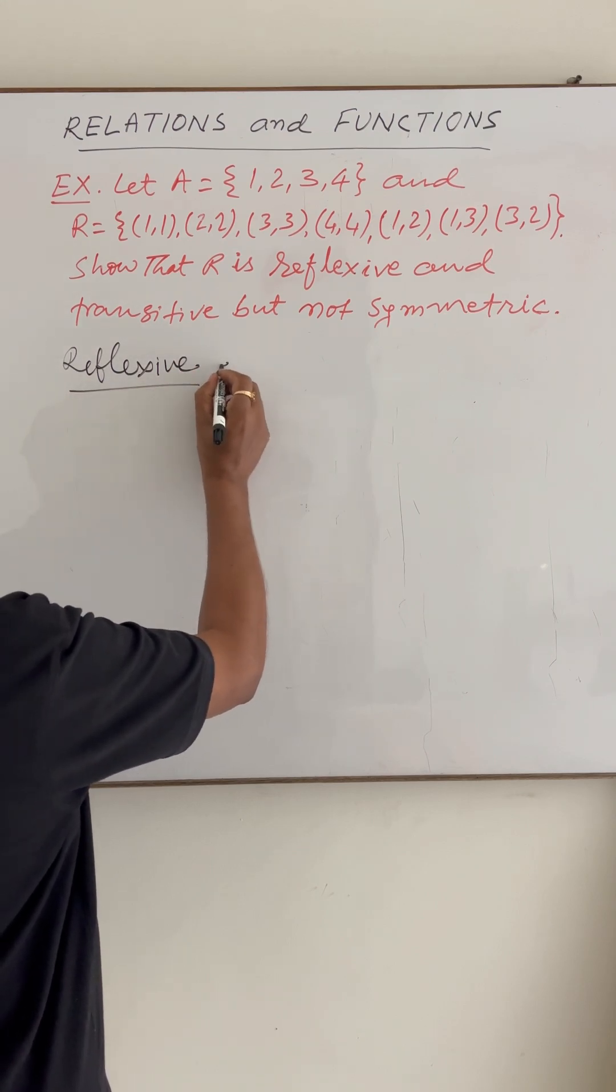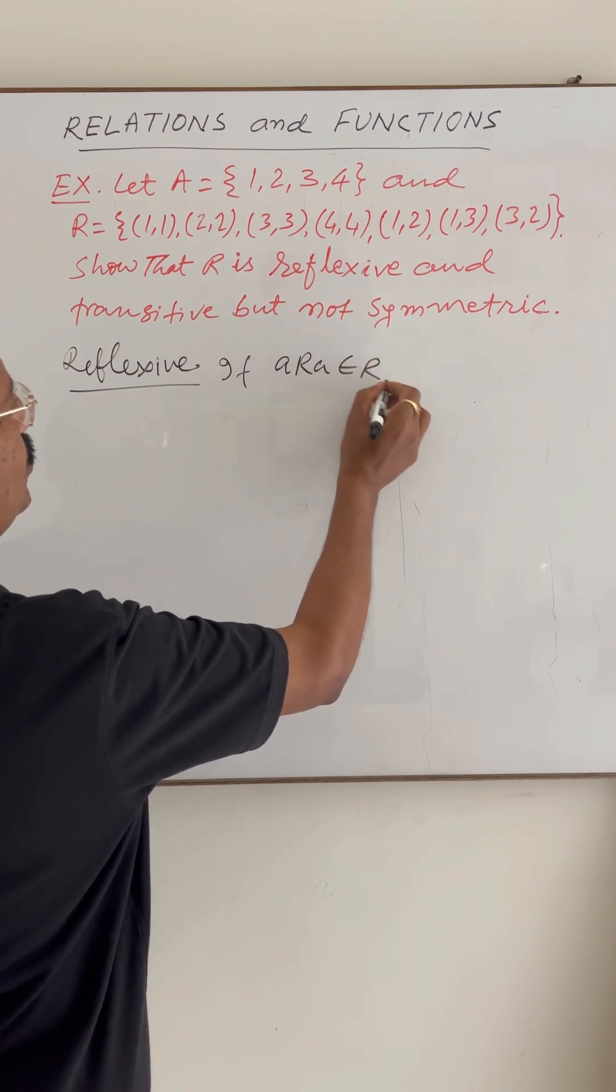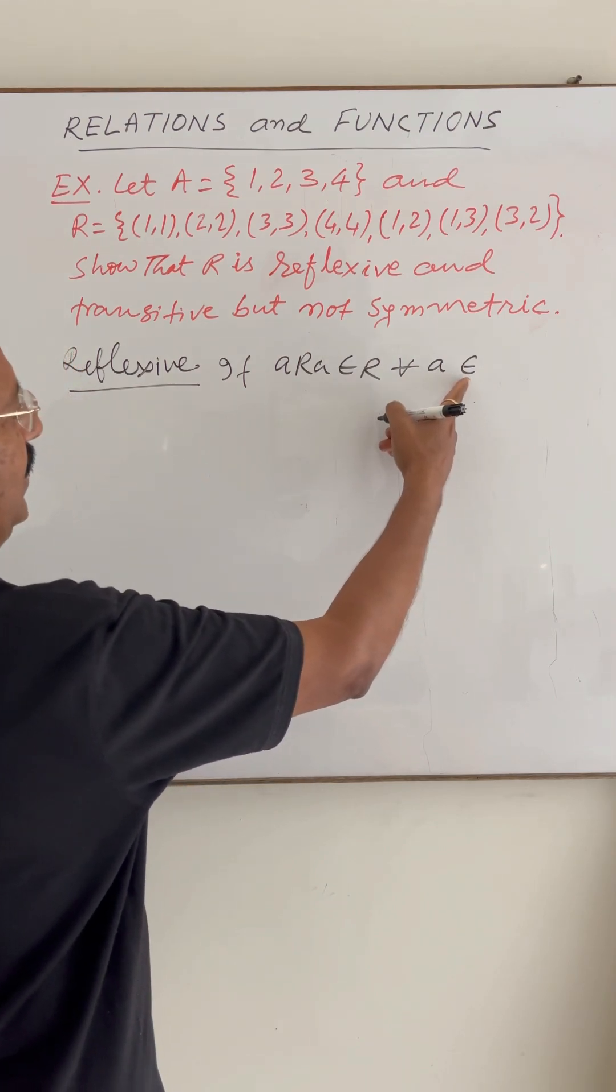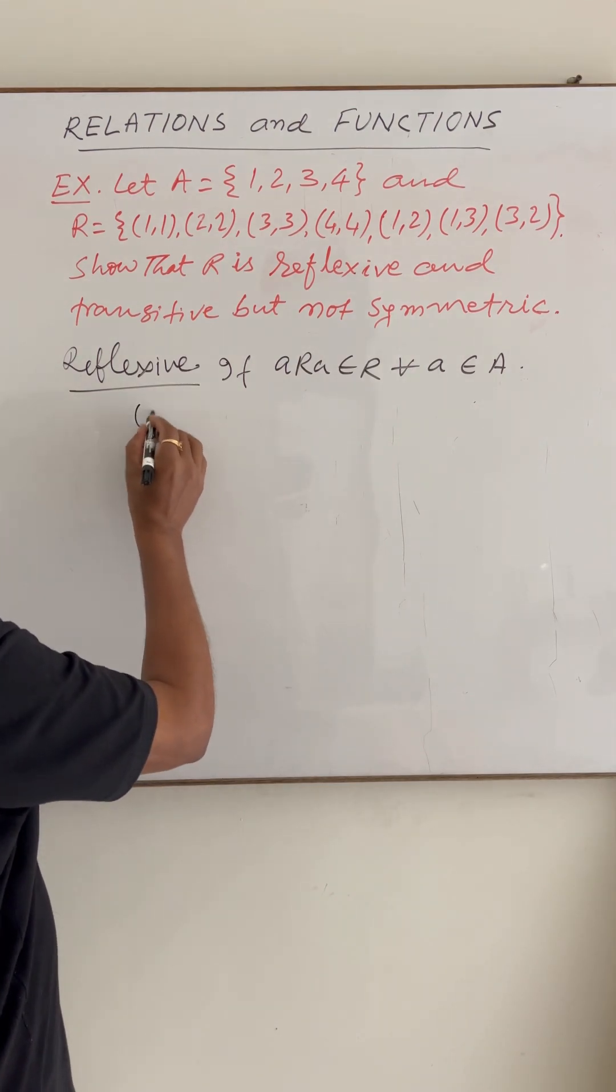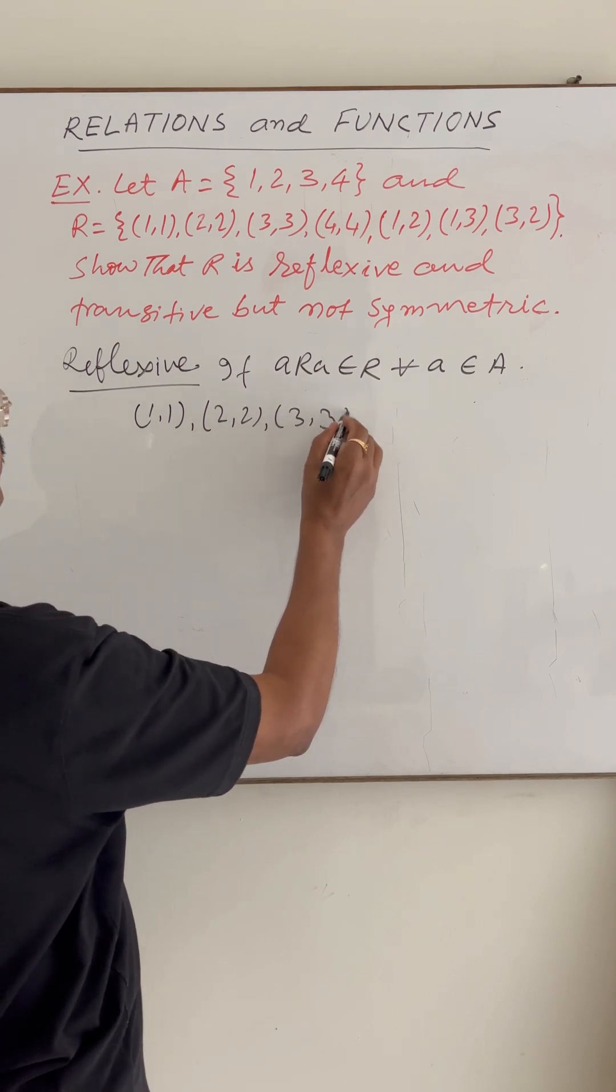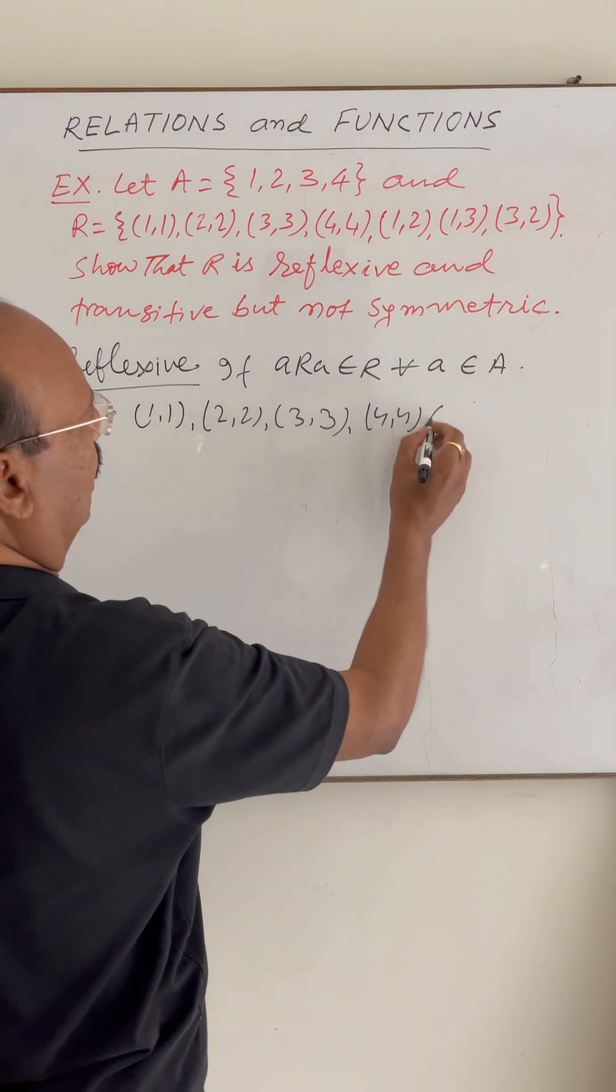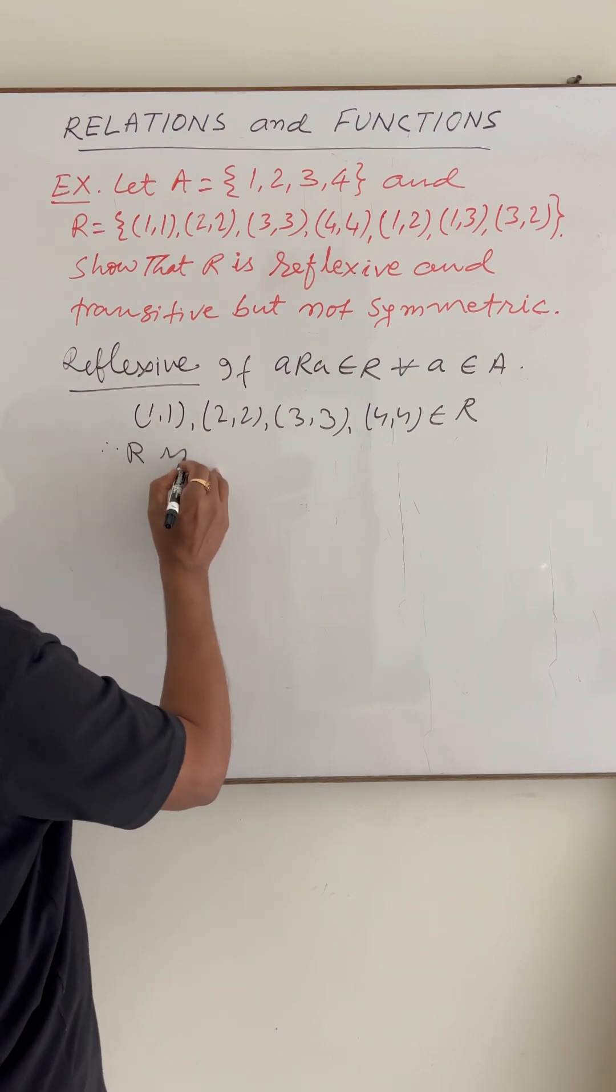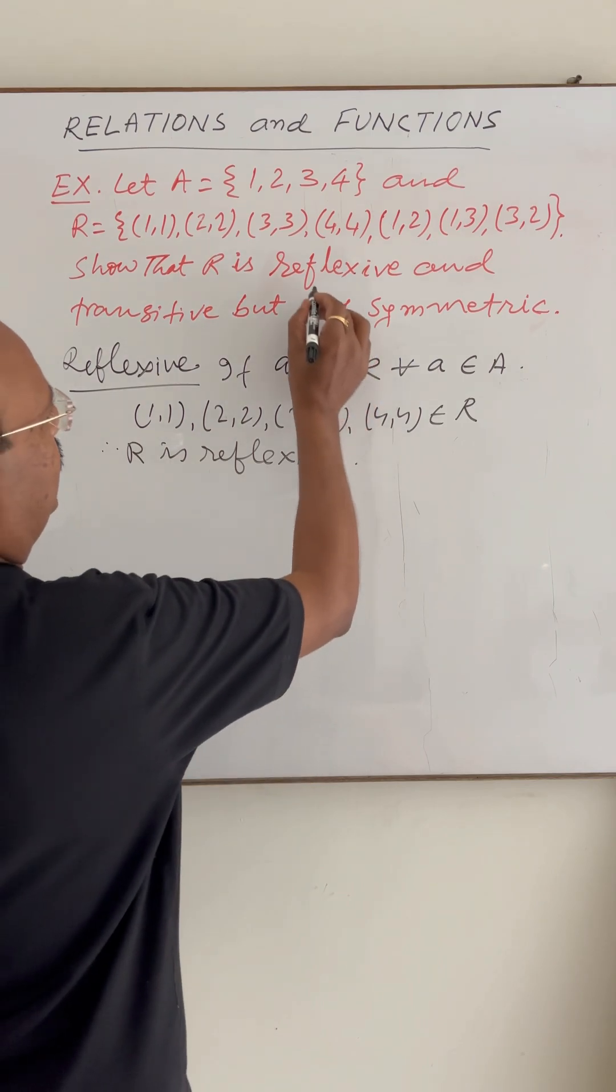We know that a relation is reflexive if (a,a) belongs to relation R for all a being a member of given set A. So here in this case also we find that (1,1), (2,2), (3,3), and (4,4) are elements of this relation. So therefore, R is reflexive. Okay, so it is proved.